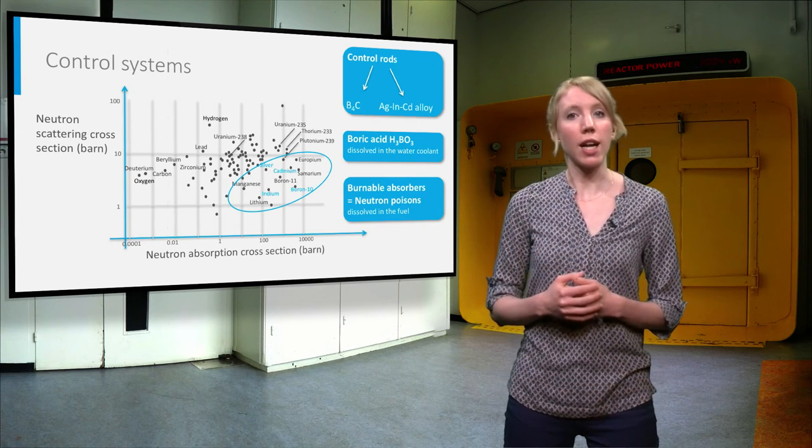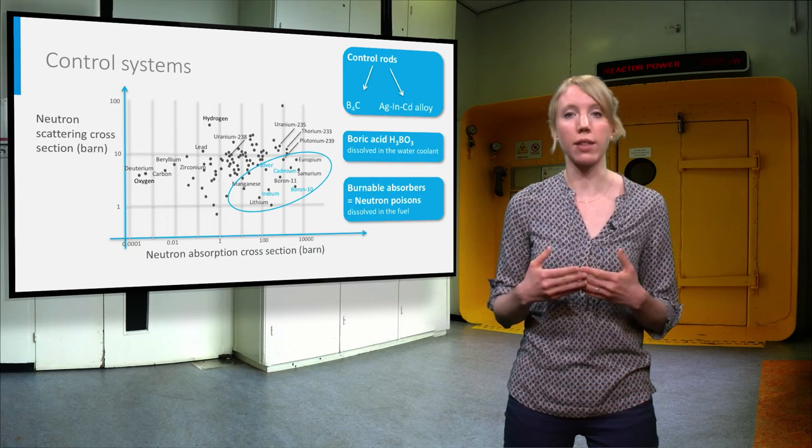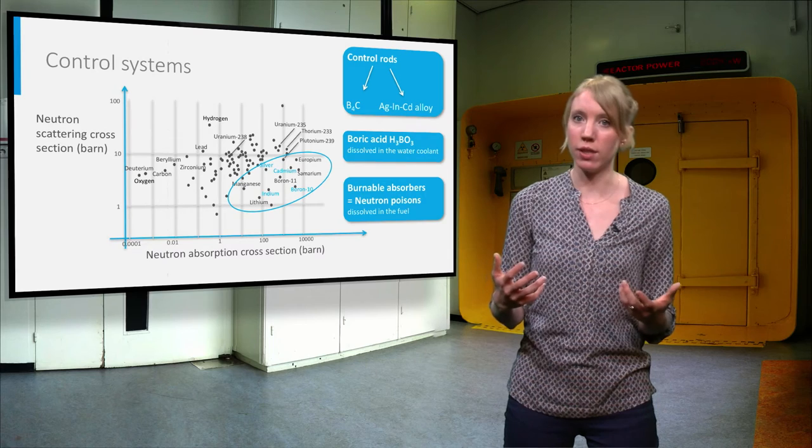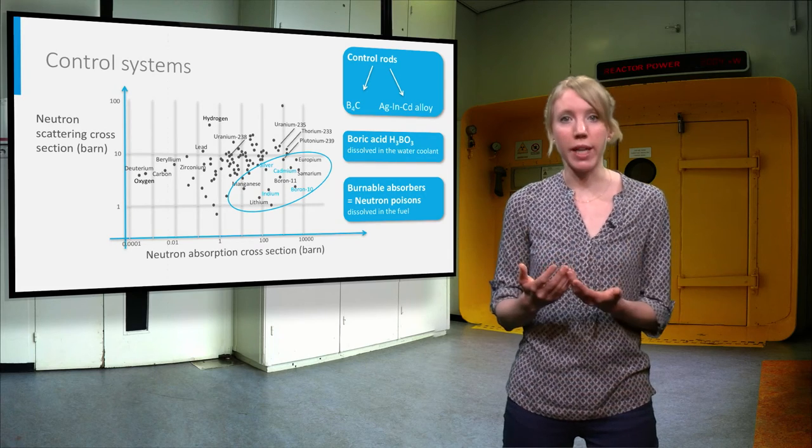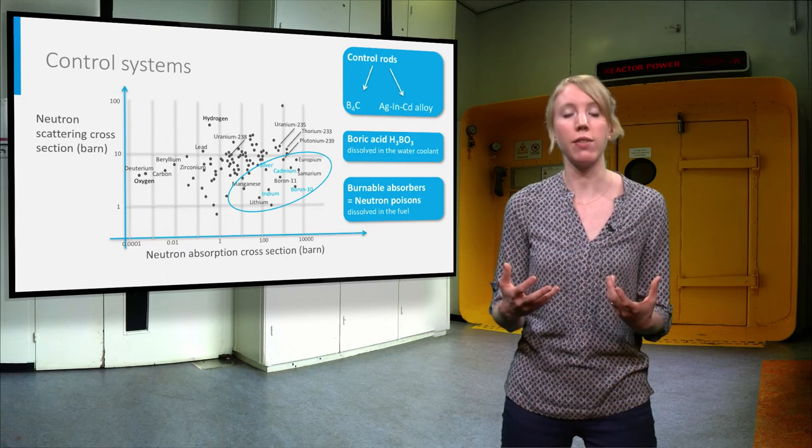The control rods are used to regulate the reactor power level or bring the reactor to a quick shutdown in case of an incident. The boric acid and the burnable absorber are used for long-term reactivity control.